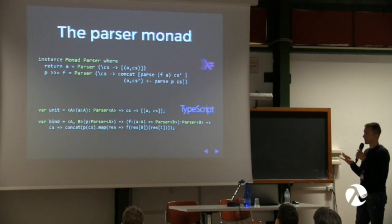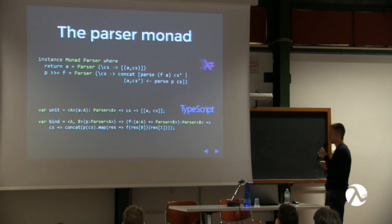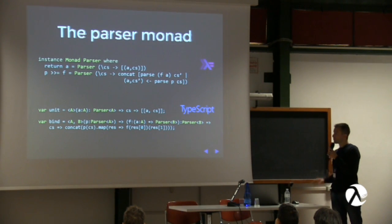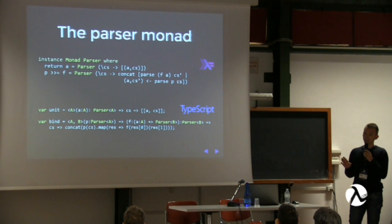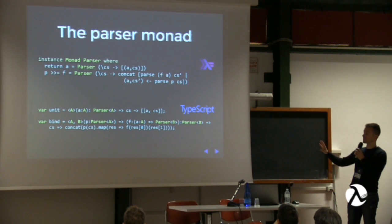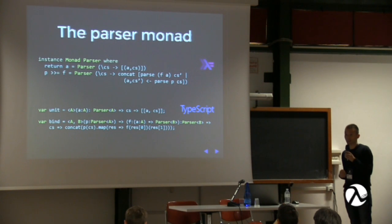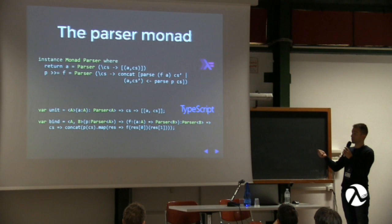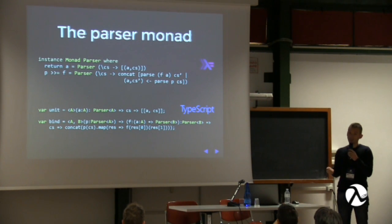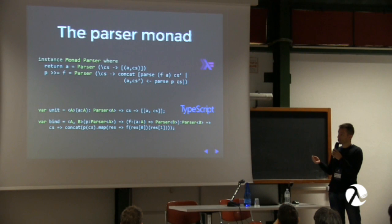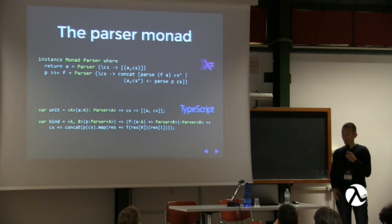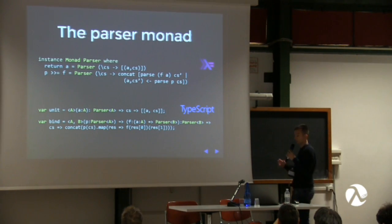Bind is more complex. What bind does is apply the first parser P to the input string, getting back an array of results. Since the second argument is a function from A to a parser of type B, we call that function with each item returned from P's application. Finally, we flatten the results — otherwise we'd have a nested array — giving us a plain, non-nested array of results.